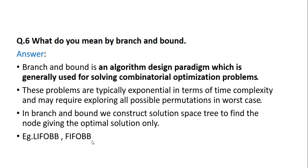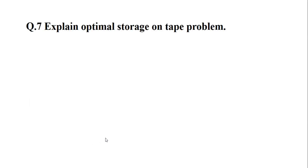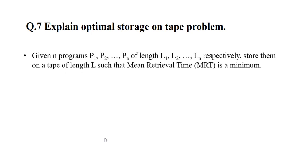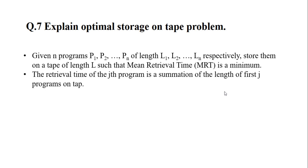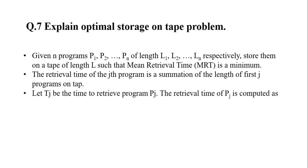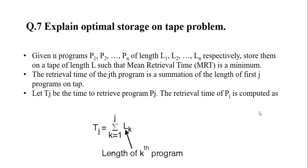We again use the concept of stack and queue. Question 7: Optimal storage on a tape problem. If you are given N programs P1 to PN of lengths L1 to LN respectively, how to store them on a tape of length L such that the mean retrieval time is minimum. The retrieval time of the j-th program is the summation of the lengths of the first j programs. Pj is the time to retrieve program Pj, computed as the summation from i equals 1 to j of the length of each program.